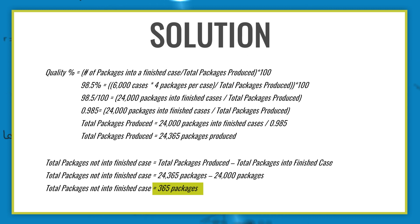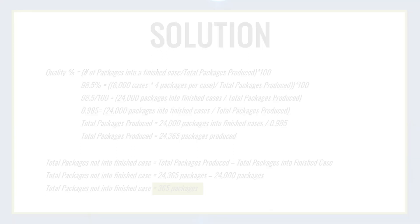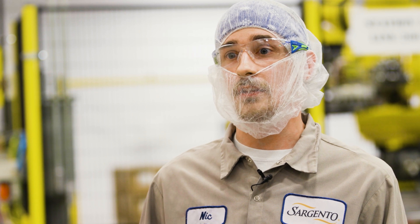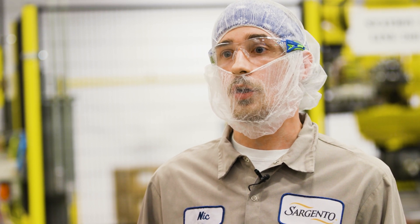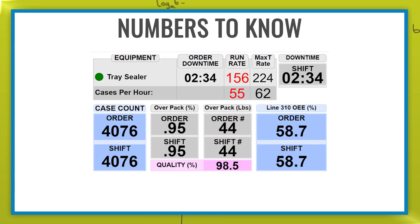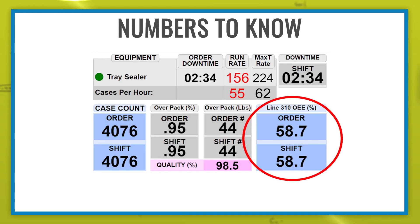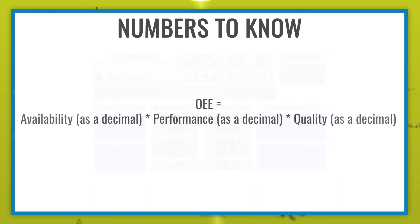Using several of the metrics that we calculated already, we can calculate an Overall Equipment Effectiveness, or what we call OEE. OEE is a measurement that shows us how well equipment is running. For most lines, we want to achieve an OEE greater than 80%. The formula looks like this.